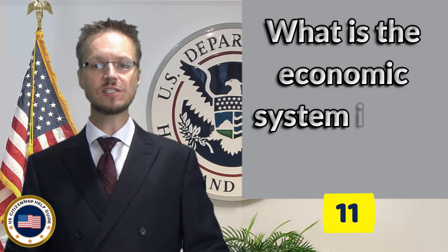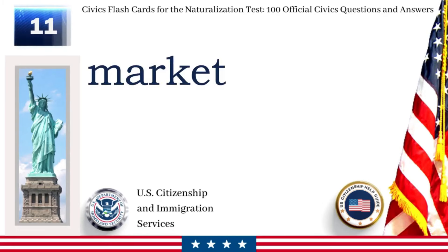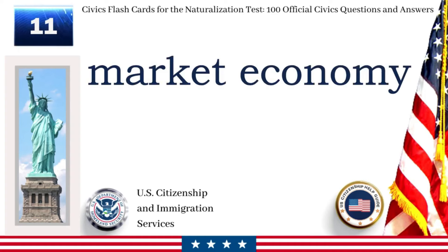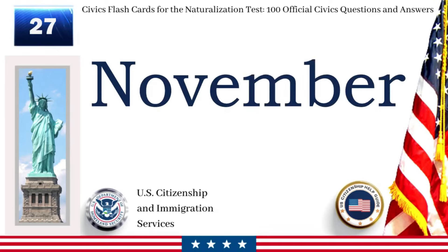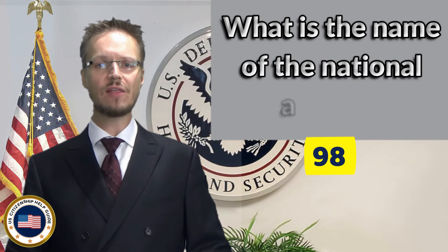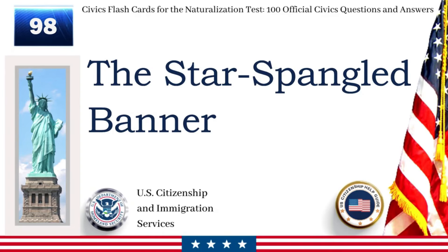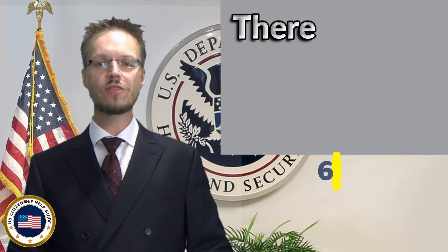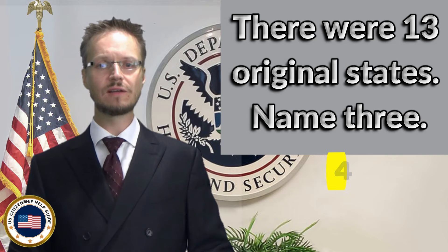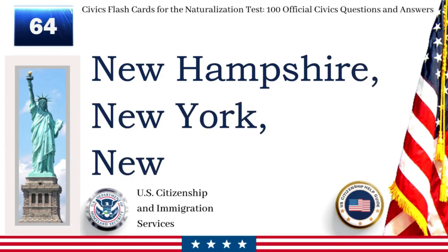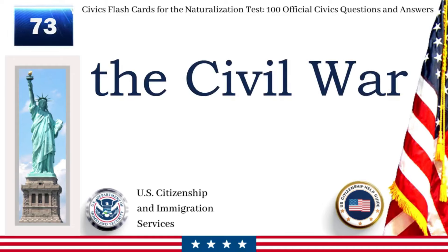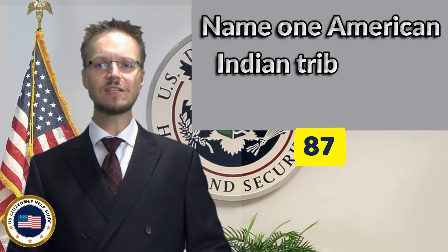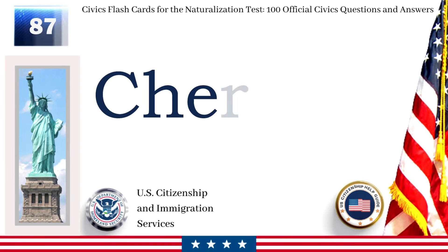What is the economic system in the United States? Market economy. In what month do we vote for the president? What is the name of the National Anthem? The Star-Spangled Banner. There were 13 original states. Name three. New Hampshire, New York, New Jersey. Name the U.S. war between the North and the South. The Civil War. Name one American Indian tribe in the United States. Cherokee.